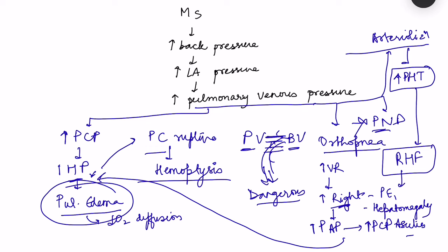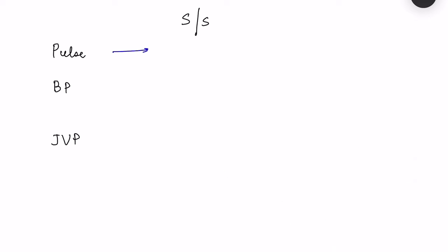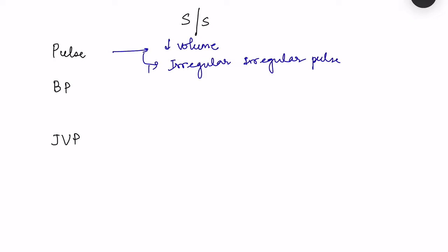Now let us review the signs and symptoms. Regarding pulse: in the very severe stage with decreased cardiac output there will be a decreased volume pulse, though this is late. If atrial fibrillation develops, there will be an irregularly irregular pulse. When palpating peripheral pulses, if emboli are present some peripheral pulses may be absent.